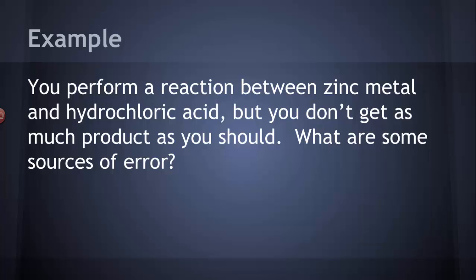So here's an example. You perform a reaction with zinc metal and hydrochloric acid. And at the end of it, you don't get as much product as you should have gotten. You maybe looked it up or you calculated and you should have gotten more than you did. So what are some sources of error?